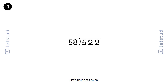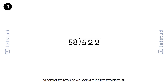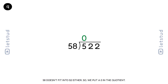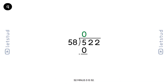Let's divide 522 by 58. We start with the digit 5. 58 doesn't fit into 5, so we look at the first two digits, 52. 58 doesn't fit into 52 either, so we put a 0 in the quotient. 52 minus 0 is 52.